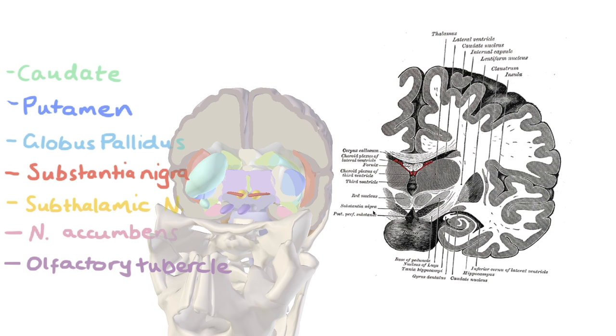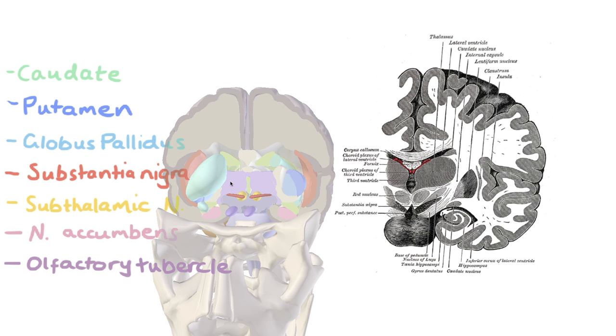The substantia nigra, right in the middle, embedded in the midbrain. It's directly underneath the thalamus and right next to what they've called the nucleus of Luys, which we now know as the subthalamic nucleus.